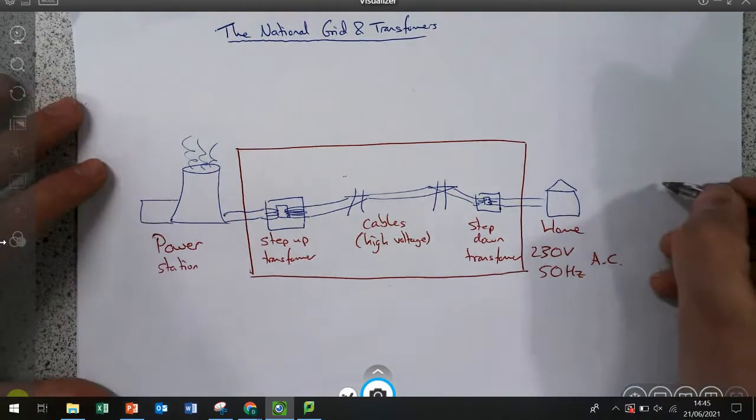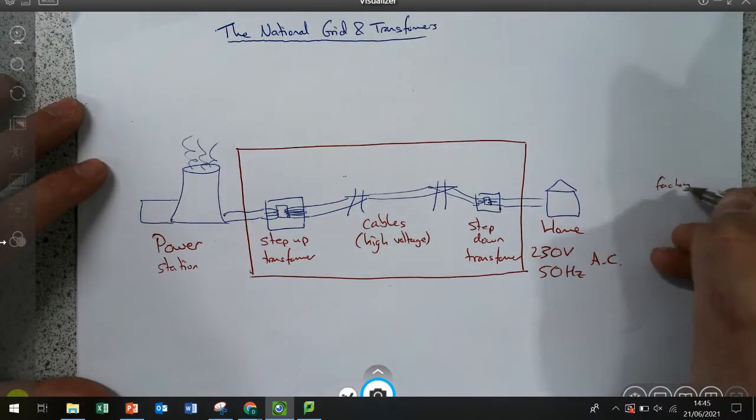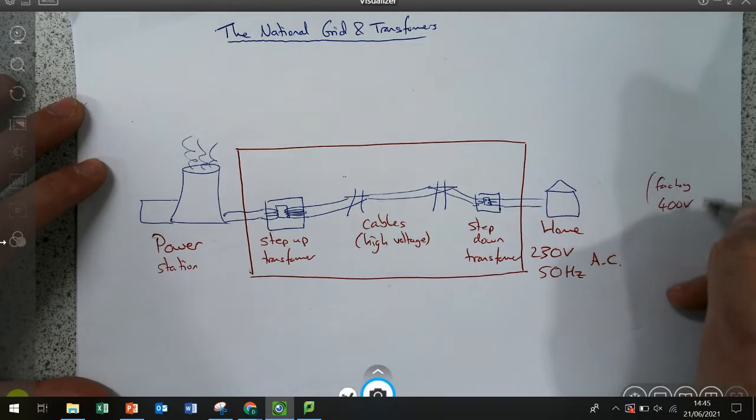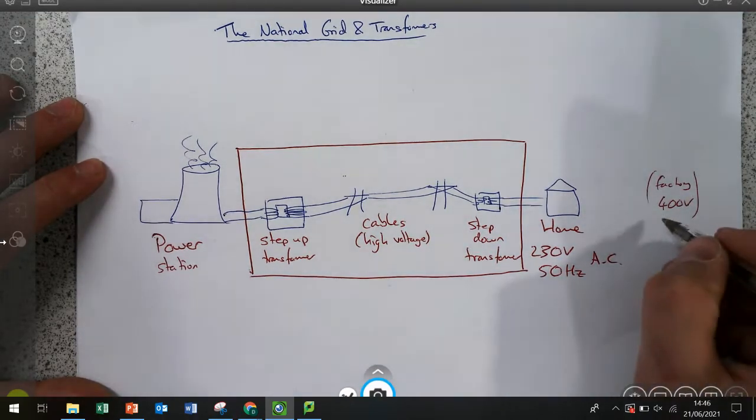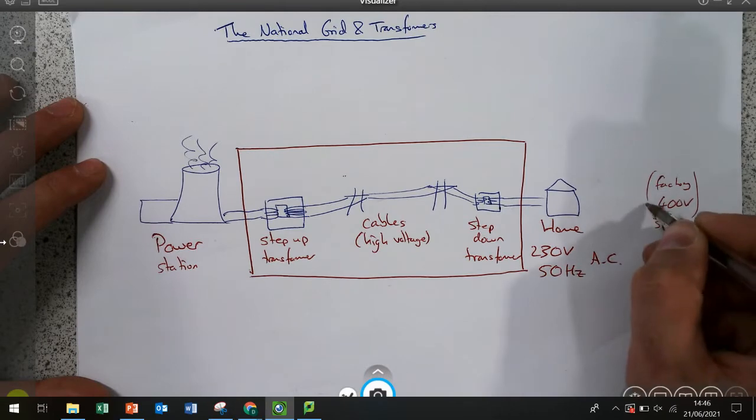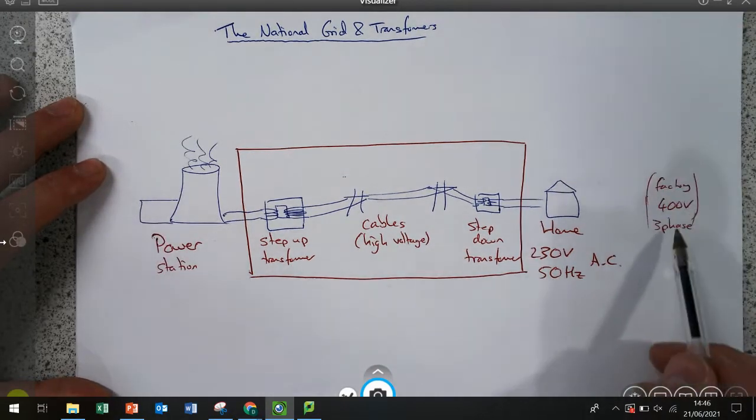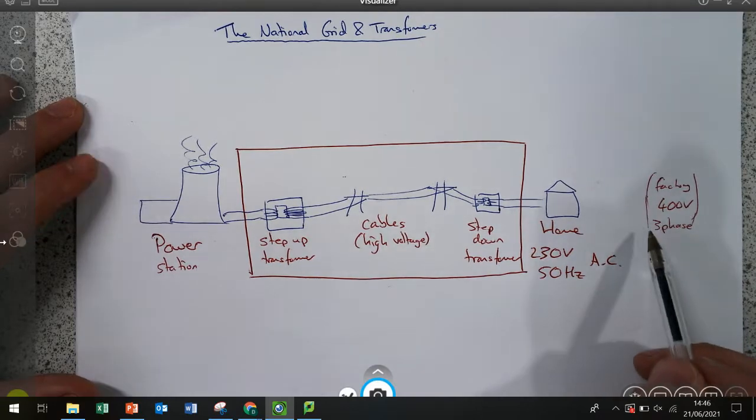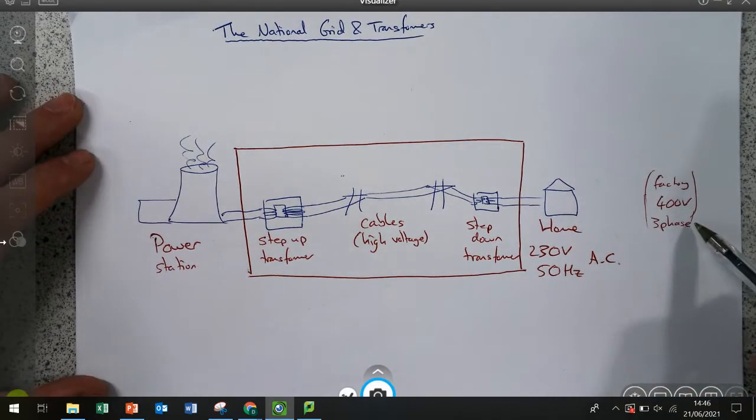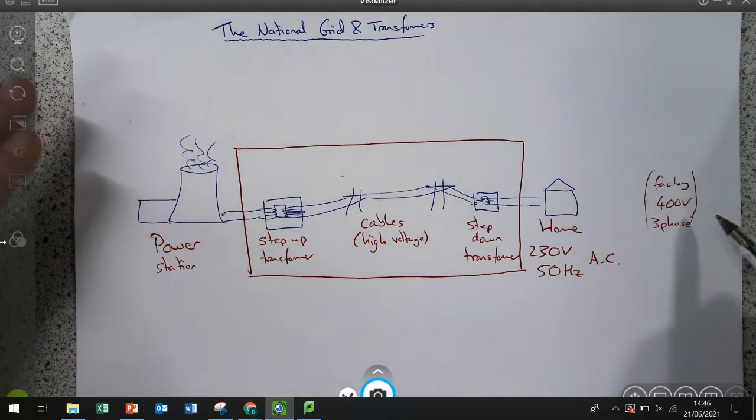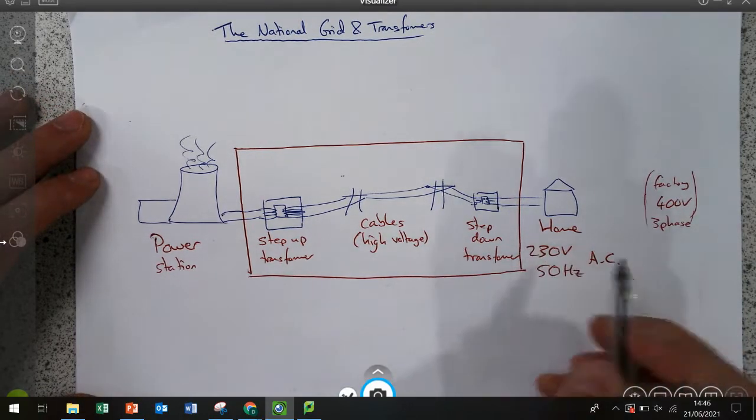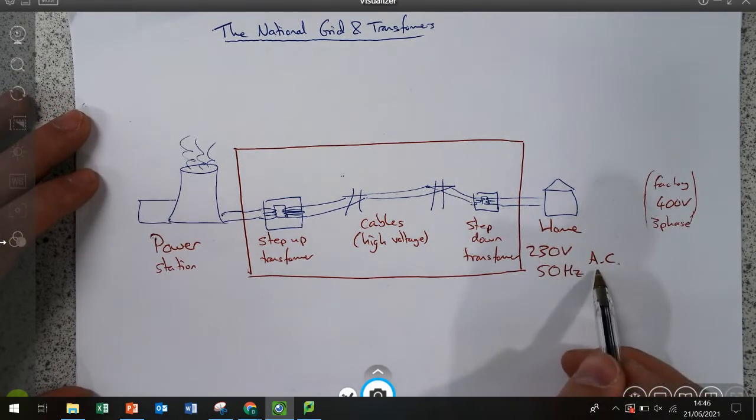If it was going into a factory it would actually be a little bit different. They're typically maybe 400 volts or maybe more and they'd also be different because they're known as three phase electricity. Now students don't need to know this but it's really interesting and worth looking up to extend your knowledge. But they do need to know that in the home it's 230 volts 50 Hertz AC.